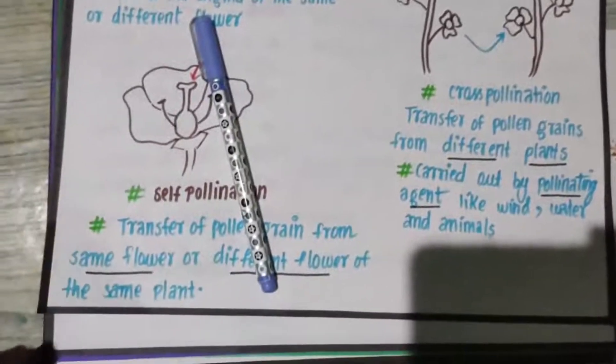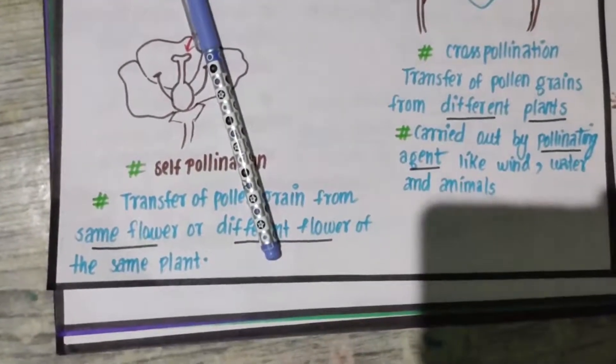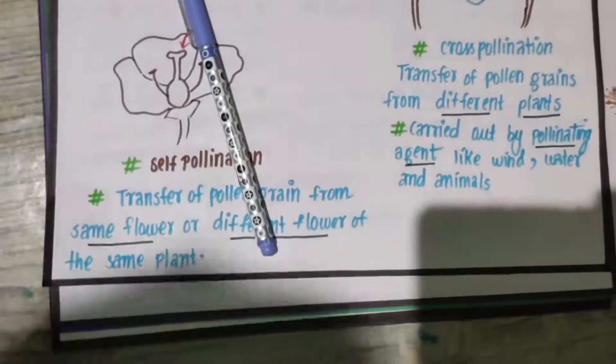Then next step. Types of pollination - you have self-pollination and then you have cross-pollination.